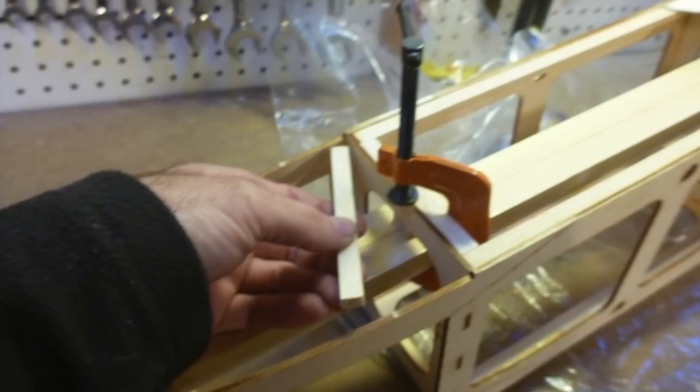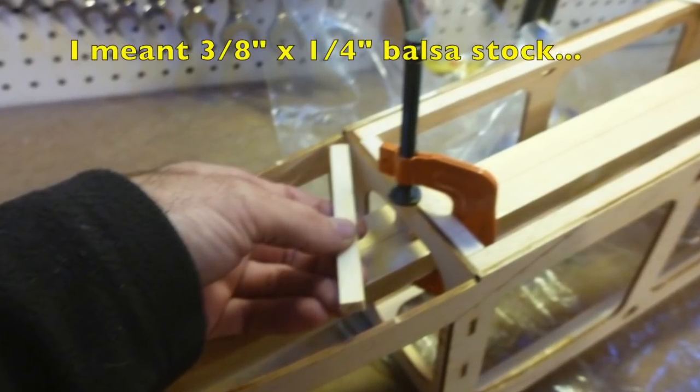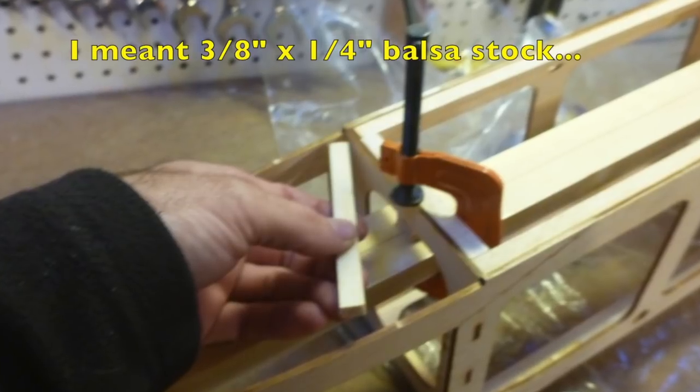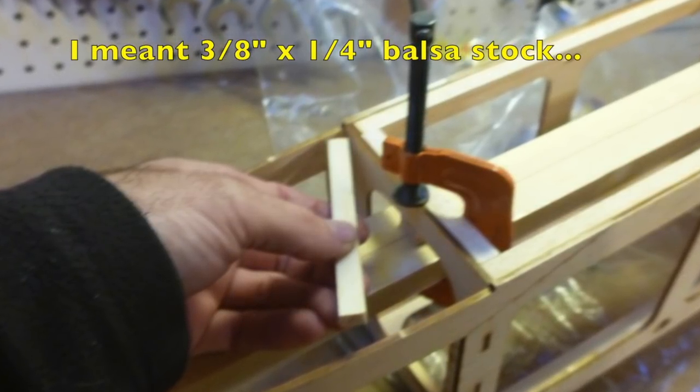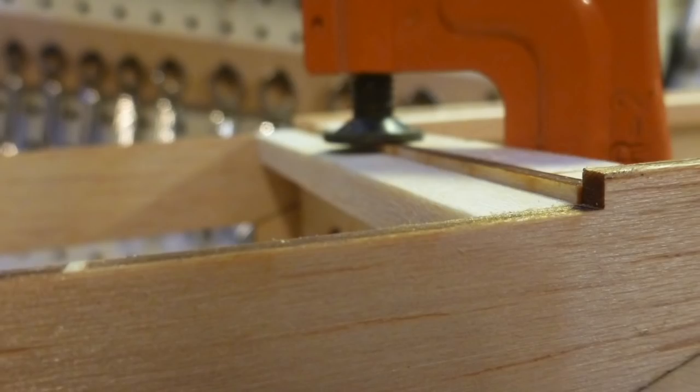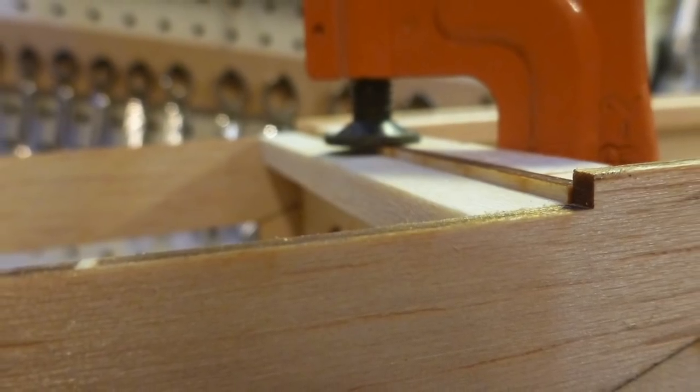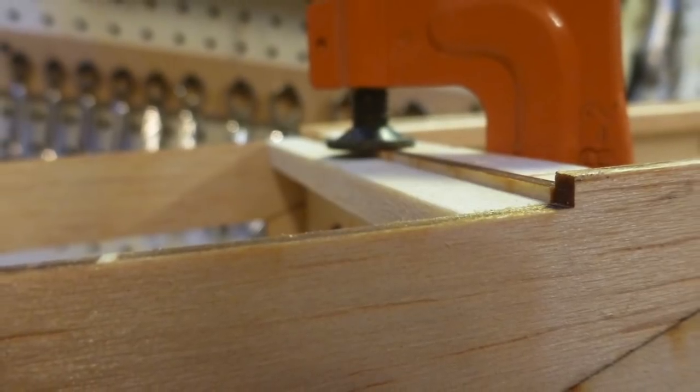Next, use a piece of supplied 3 inch by quarter inch balsa stock cut to fit, and make a shelf on the rear of the aft bulkhead part number 6. It should lay down and be flush with the lower aft surface of the rear fuselage side.